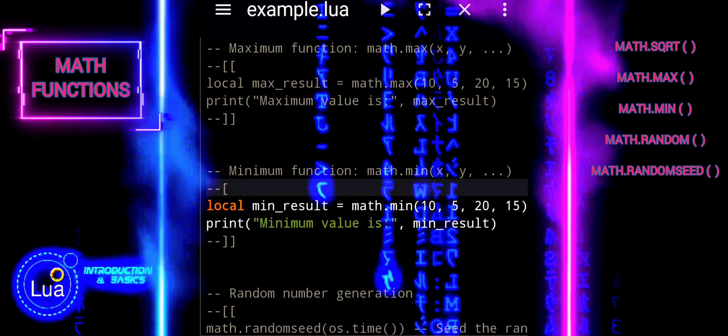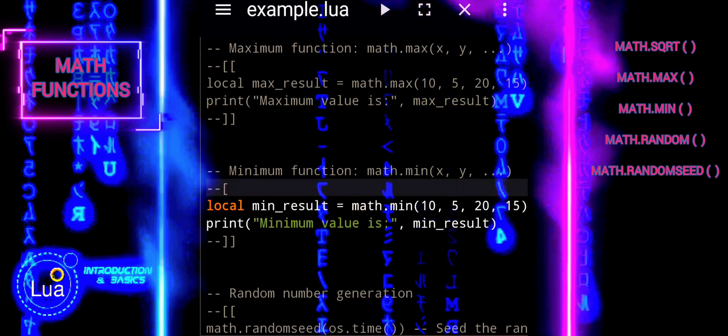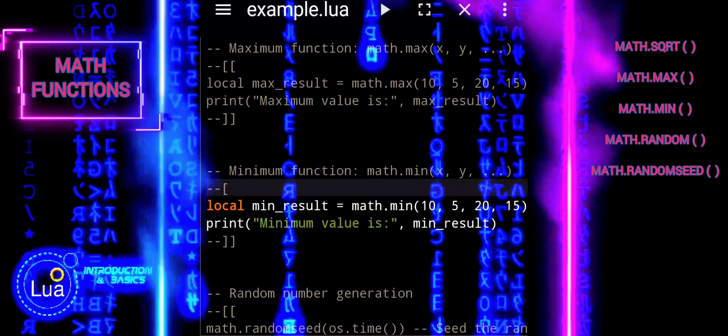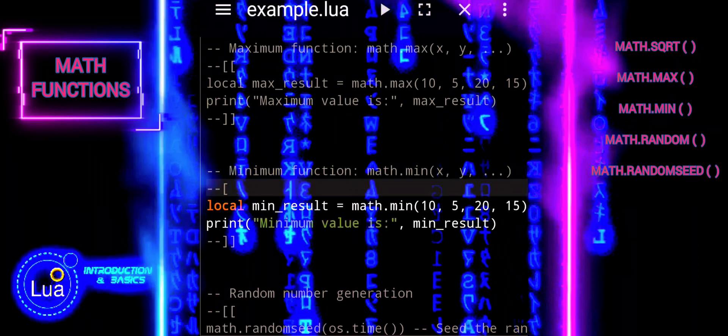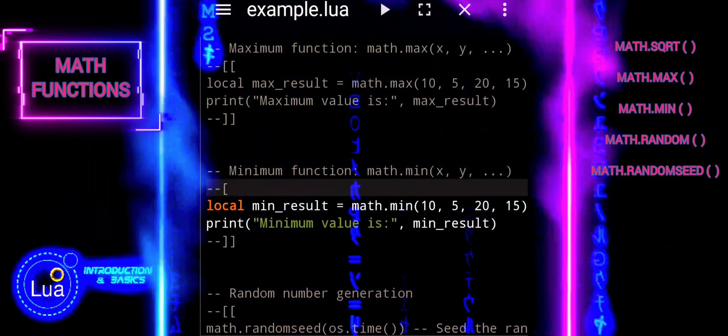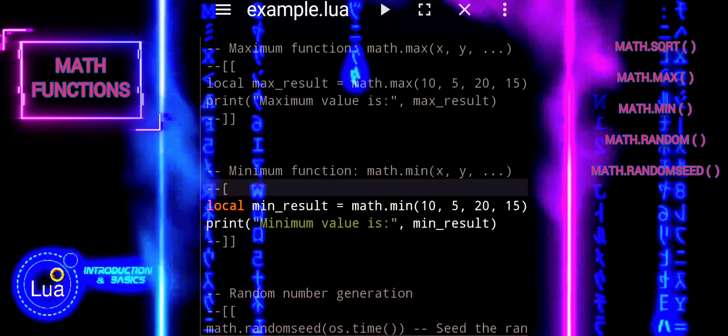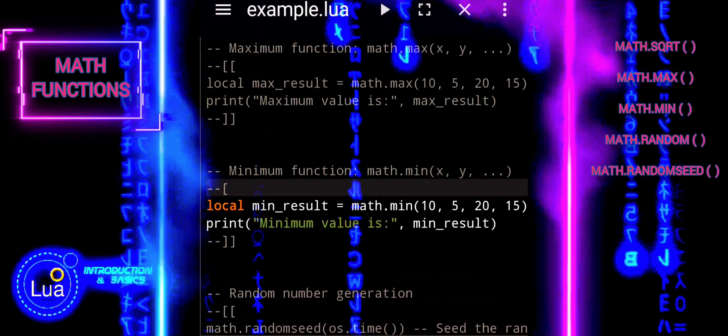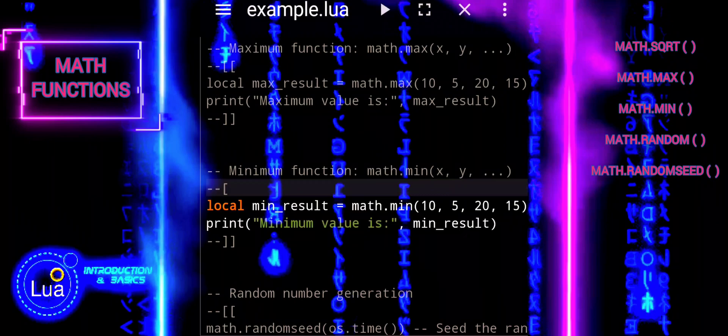The math.min function is commonly used in scenarios where you need to find the smallest value among a group of numbers. It's useful in various applications, such as determining the lowest price in a list of products, identifying the earliest date in a data set, or finding the minimum distance between two points.